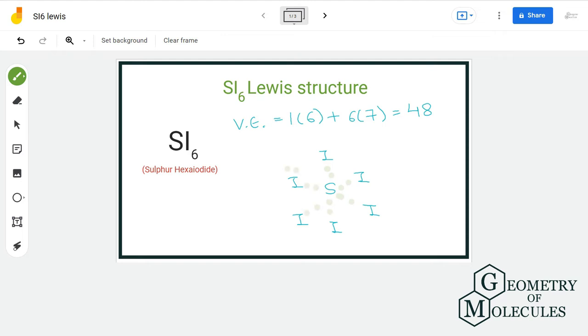If you see, each iodine atom needs 6 electrons for complete octet. So, let us assign 6 to each one of them.